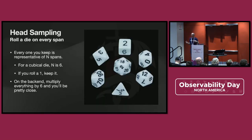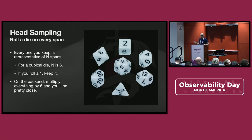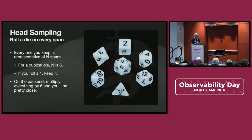The first and most obvious mechanism — available in all the libraries including all the OTel libraries — is head sampling. At the time you create a span, you roll a die. Let's say it's a six-sided die: if it's a one, we keep that span; if it's two through six, we drop it. So you're taking one-sixth the amount of data that escapes your system and gets into your backend.